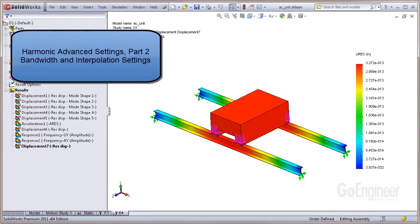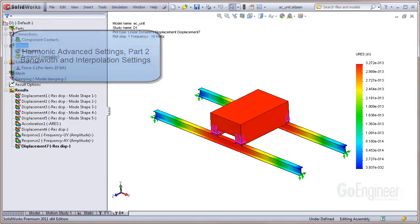In this video we discuss the bandwidth and interpolation settings in the Harmonic Options Advanced tab. This is a continuation from Harmonic Advanced Settings Part 1 which covered the frequency point option in the Harmonic Options Advanced tab.